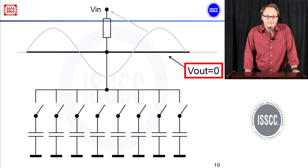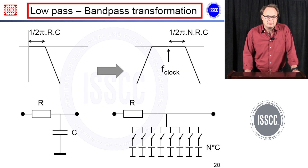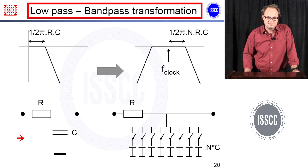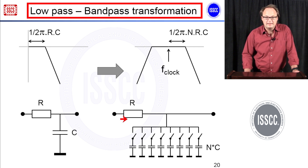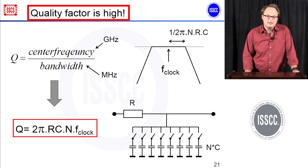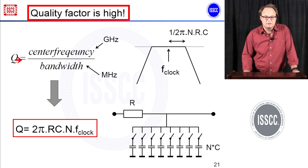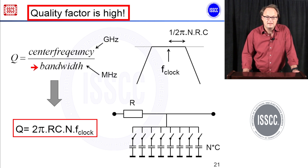For frequencies equal to the clock we get the same signal coming out, and for other frequencies we don't get anything out, so this behaves like an ideal bandpass filter. What happens is a low pass to bandpass transformation: this is the RC low pass filter used as a building block with a bandwidth of 1/(2πRC), and that filter is now upconverted around the clock with a bandwidth equal to this. The factor N comes in because each capacitor only sees this resistor 1/N of the time, so it looks like the resistor is N times bigger — that's why the bandwidth is N times smaller. The quality factor is extremely high because it's defined as center frequency over bandwidth.